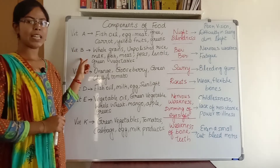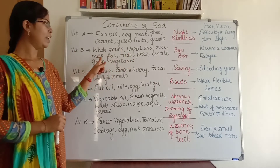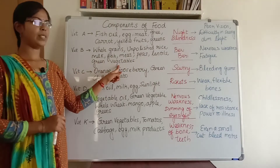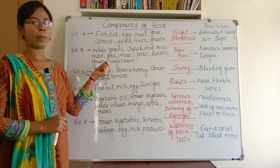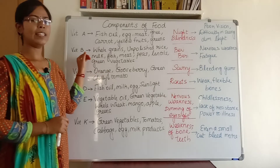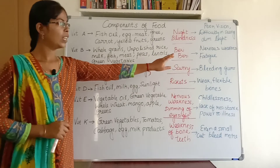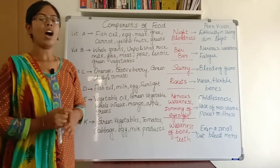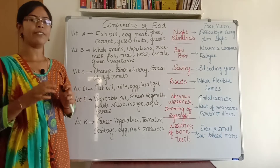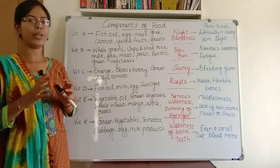Vitamin B can be seen in foods like whole grains, unpolished rice, milk, fish, meat, peas, lentils, and green vegetables. If we don't eat these foods properly, we will be deficient in vitamin B and get a disease called beriberi. The symptoms of beriberi are nervous weakness and fatigue — our nervous system will become very weak, and our body will become very tired so we can't do any work.